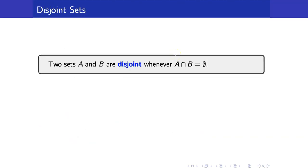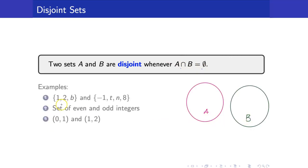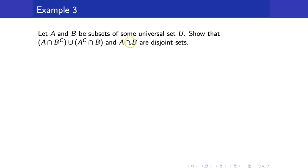Lastly, let us recall the meaning of disjoint sets. Two sets are disjoint whenever their intersection is the null set. In terms of Venn diagrams, they will look like this. Here are examples of disjoint sets: the set containing {1, 2, B} and the set containing {-1, T, N, 8}; the set of even and odd integers, which have nothing in common; and the open intervals (0,1) and (1,2). Sometimes we will be asked to show that two sets are disjoint, which is the case in this example. We have two sets A and B, and we want to show that these two sets are disjoint.